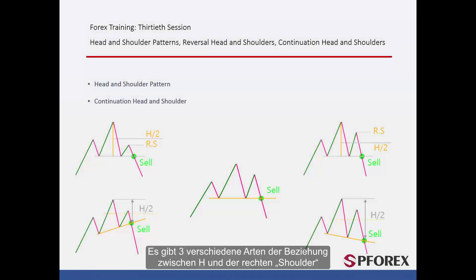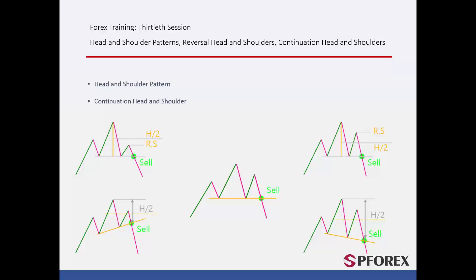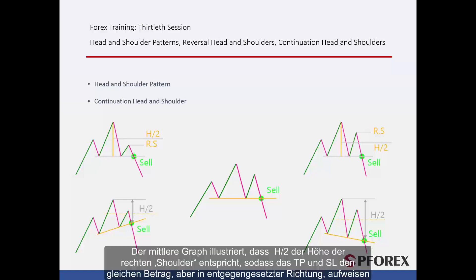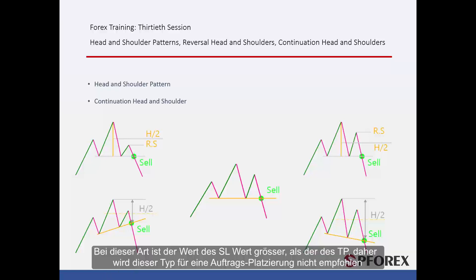There are three different types of relation between H and right shoulder. The left graph shows a pattern where the right shoulder height is lower than H2. This type of head and shoulder represents the best opportunity to place a sell order. The middle graph illustrates H2, which equals the height of the right shoulder. Thus, TP and SL have the same amount but in opposite directions. The right graph shows that the right shoulder height is higher than H2. In this type, SL value is more than TP, so this type is not recommended for placing an order.